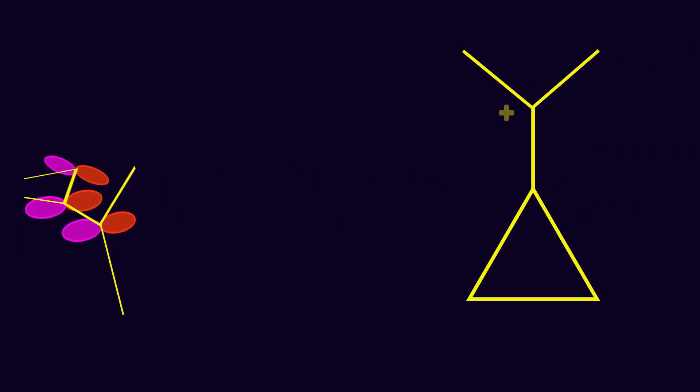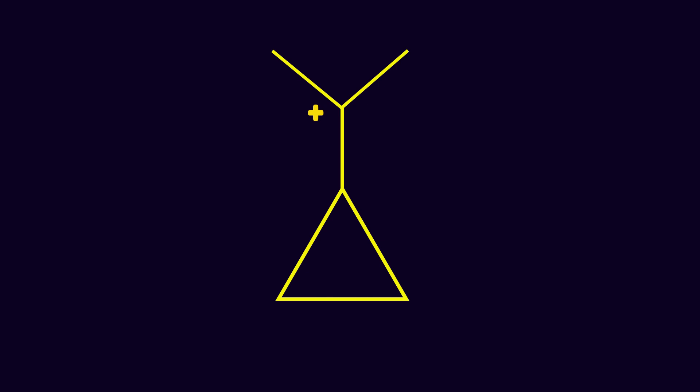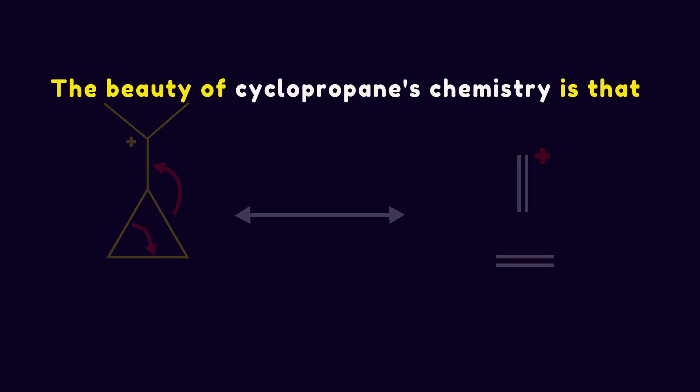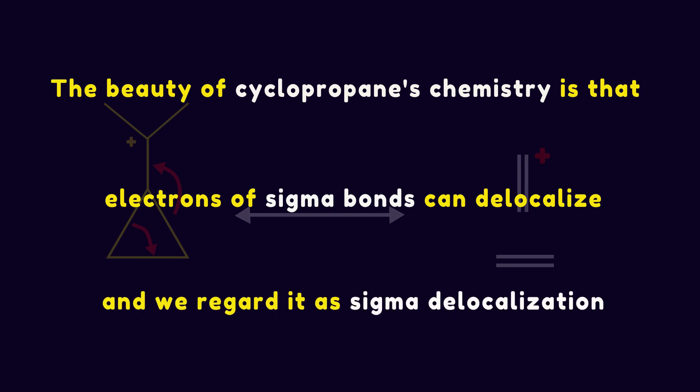Calculated bond lengths support this conjugation effect. Choosing bond length in propene as a reference, two carbon-carbon bonds in cyclopropane have elongated, while the third has shortened. We can show this by an unusual resonance structure. The delocalization of pi electrons is a usual phenomenon, but the beauty of cyclopropane's chemistry is that electrons of sigma bonds can delocalize, and we regard it as sigma delocalization.